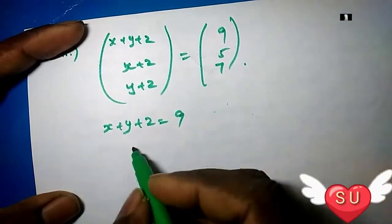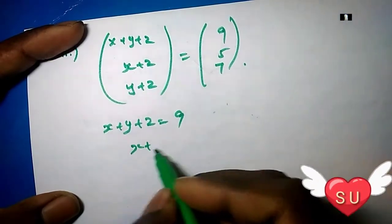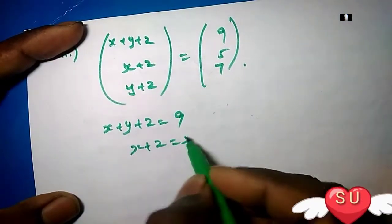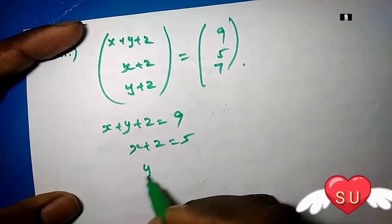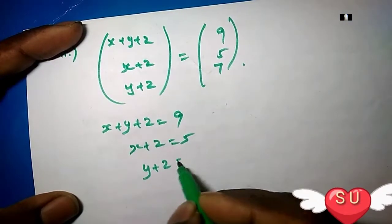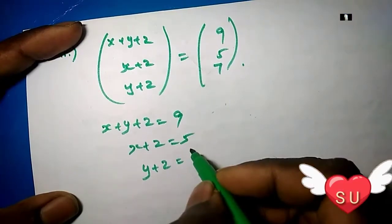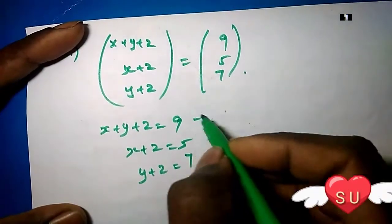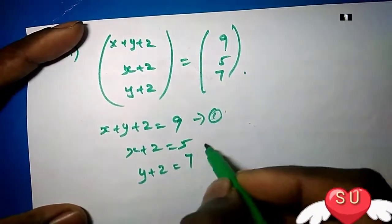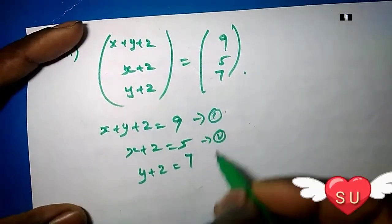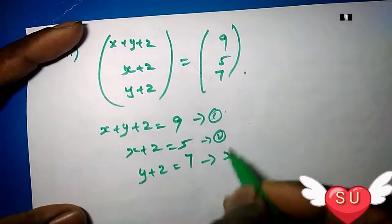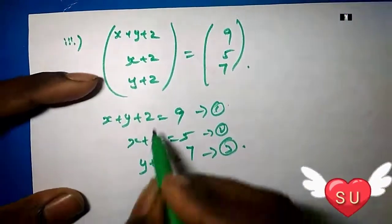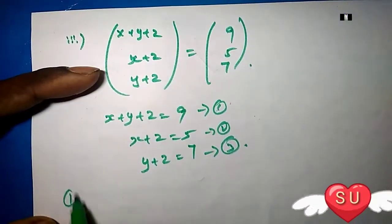So the first equation is x plus z equals 5, the second equation is y plus z equals 7, and the third equation is x plus y plus z equals 9.